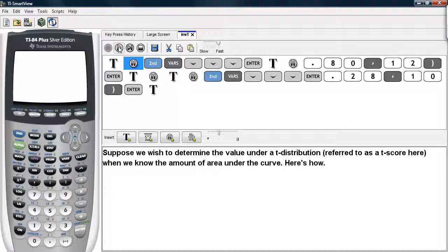Suppose we wish to determine the value under a t-distribution, referred to sometimes as a t-score, when we know the amount of area under the curve. Here's how you can do it on a TI-84 calculator. If you go under the Distributions menu and choose Option 4, the INVT command,